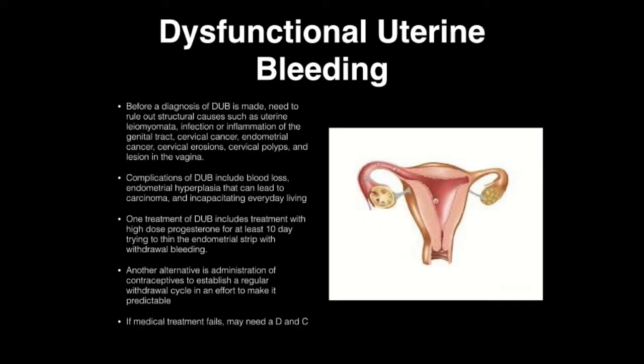Before a diagnosis of dysfunctional uterine bleeding can be made, you need to rule out structural causes such as uterine myomata, infection, inflammation of the genital tract, cervical cancer, endometrial cancer, cervical erosions, cervical polyps, or a lesion within the vagina itself. Complications of dysfunctional uterine bleeding include blood loss, endometrial hyperplasia that can lead to carcinoma, and incapacitating effects on everyday living.